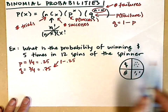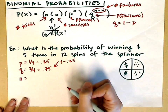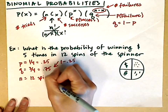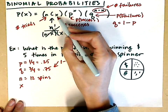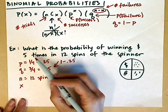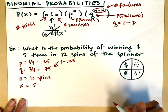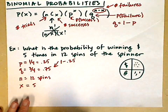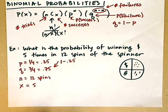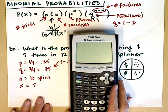We also need n — the number of trials. We've got 12 spins. X, the number of successes, is what we're looking for; we want to win five times, so x equals 5. To use this formula, we're going to call the combination function on the calculator and enter this directly.